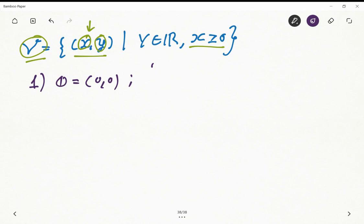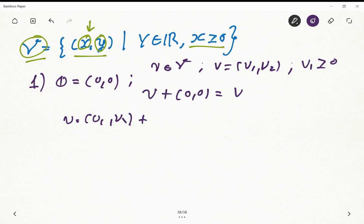The neutral element should satisfy that if I pick a vector u on the space V, defined as (u1, u2) where u1 is greater or equal than zero, and I sum with the vector (0,0), this should equal u. That is trivial because u equals (u1, u2) plus (0,0) and is equals to u again.